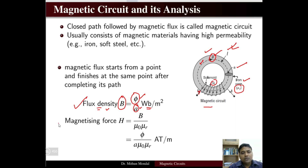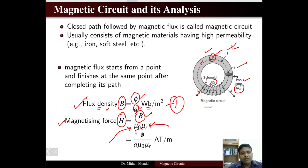Next we compute the magnetizing force, denoted by H. It is equal to the magnetic flux density divided by mu_0 times mu_r, where mu_0 is the permeability of free space and mu_r is the relative permeability of the medium. Substituting B gives H = phi / (A · mu_0 · mu_r). The value of mu_0 is constant at 4π × 10⁻⁷ Henry per meter, and the unit of magnetizing force is ampere-turns per meter.